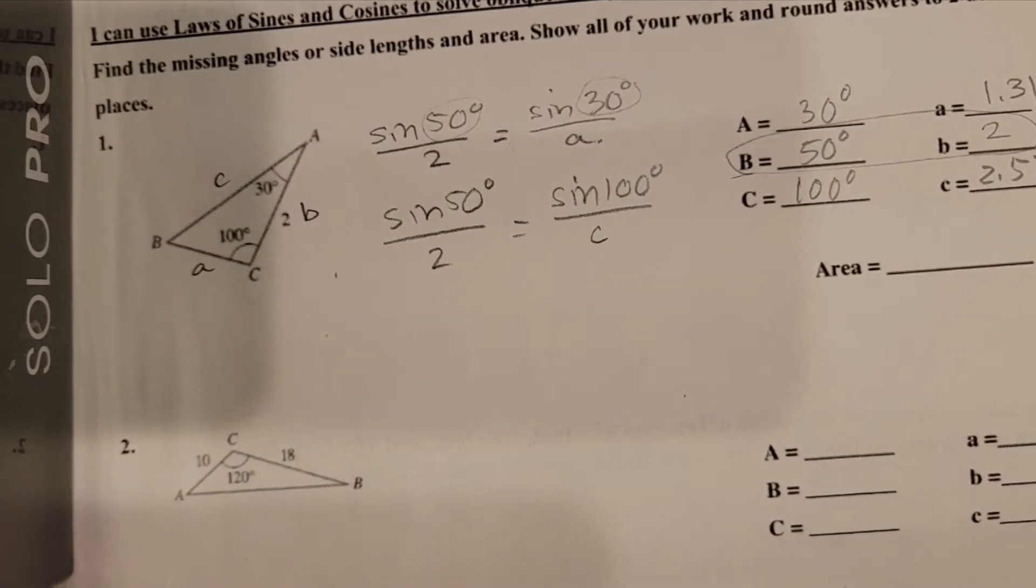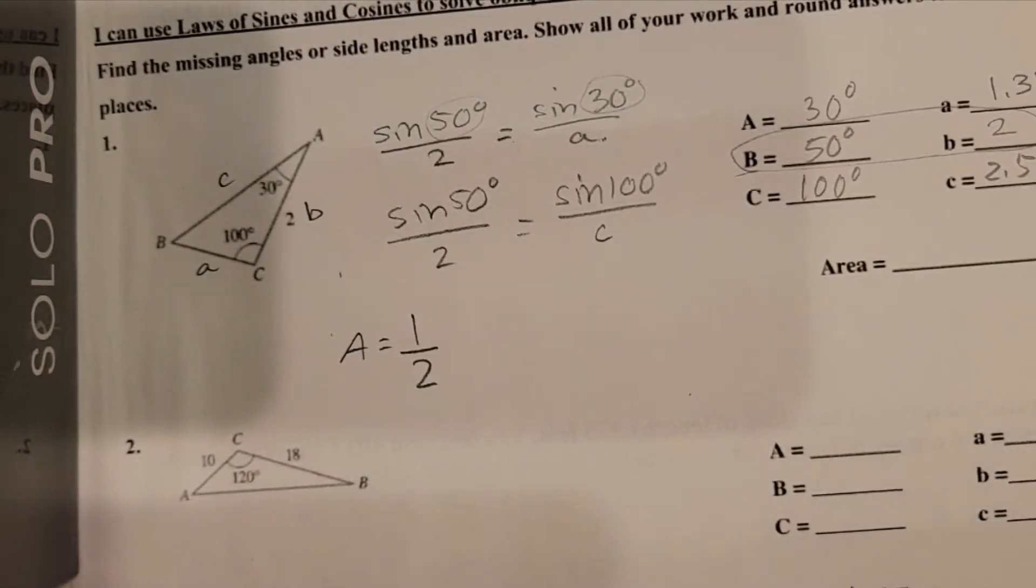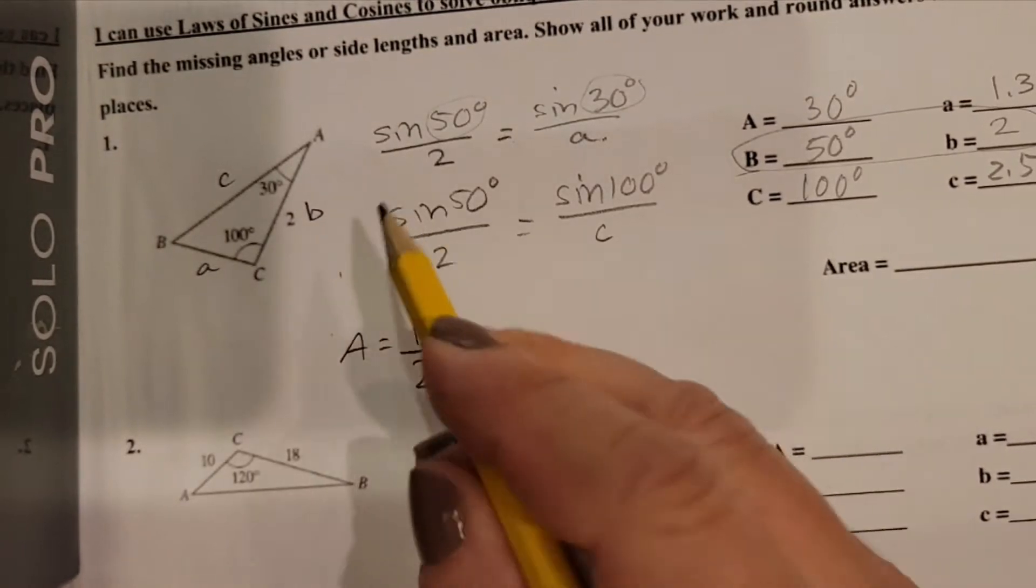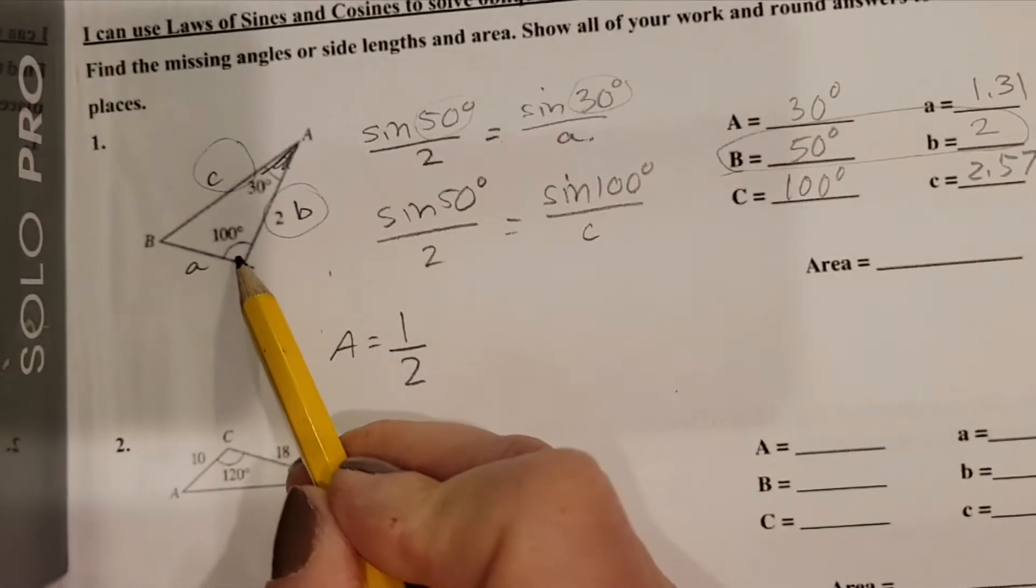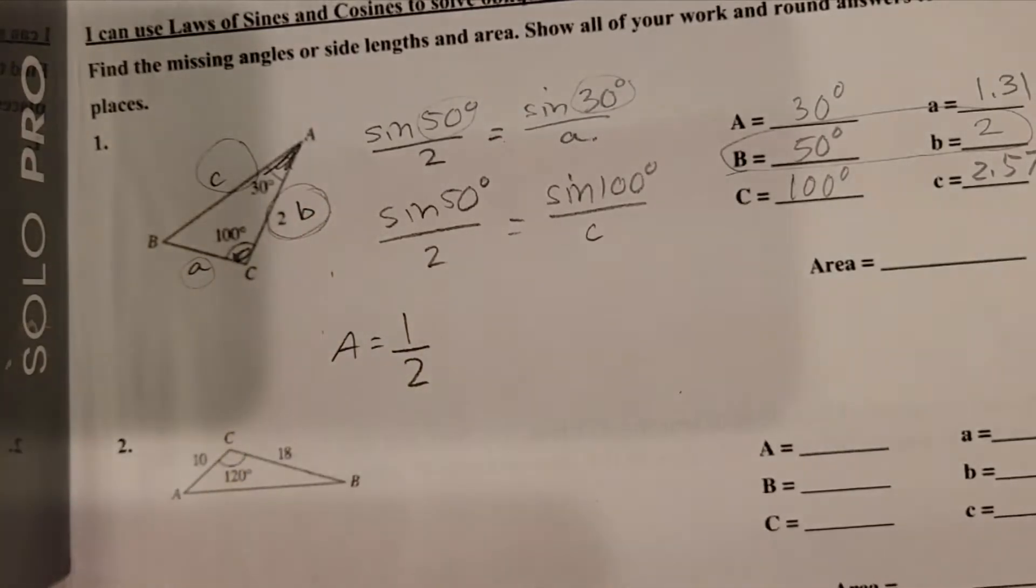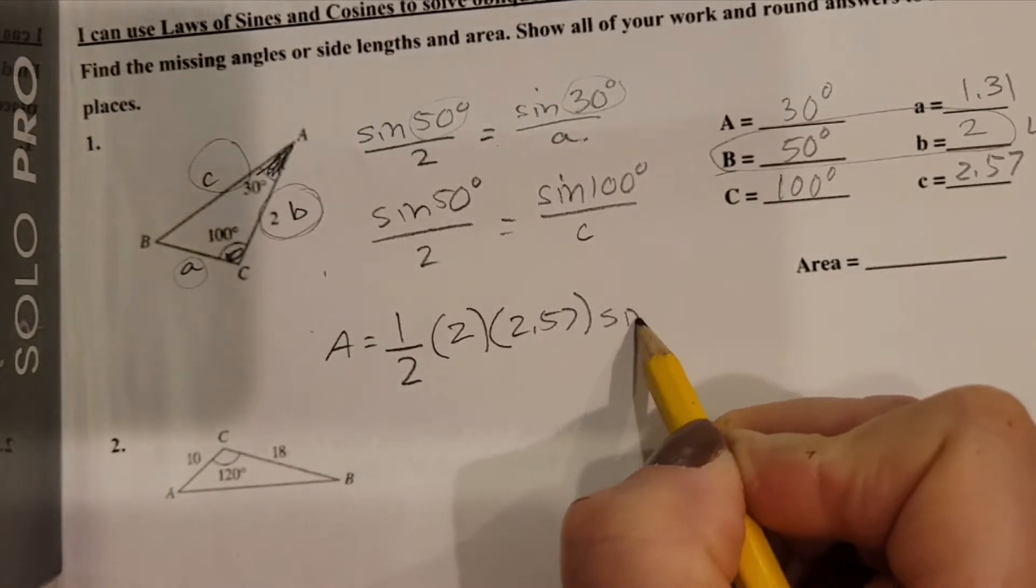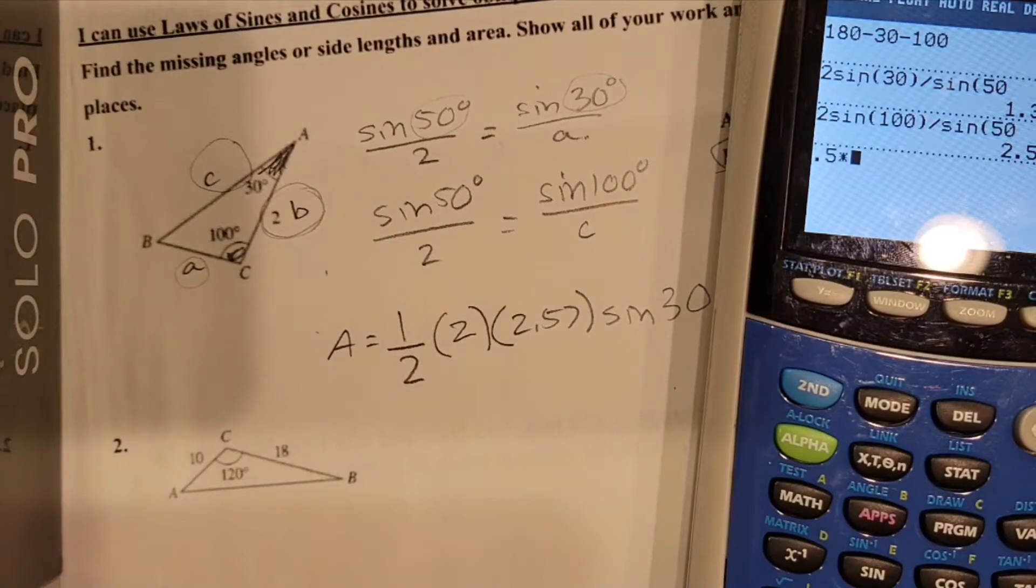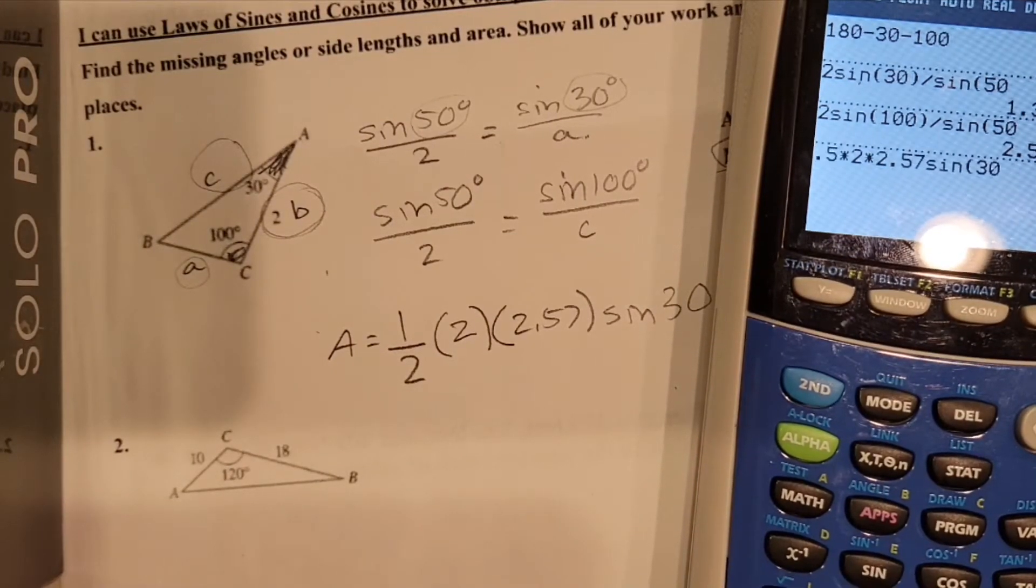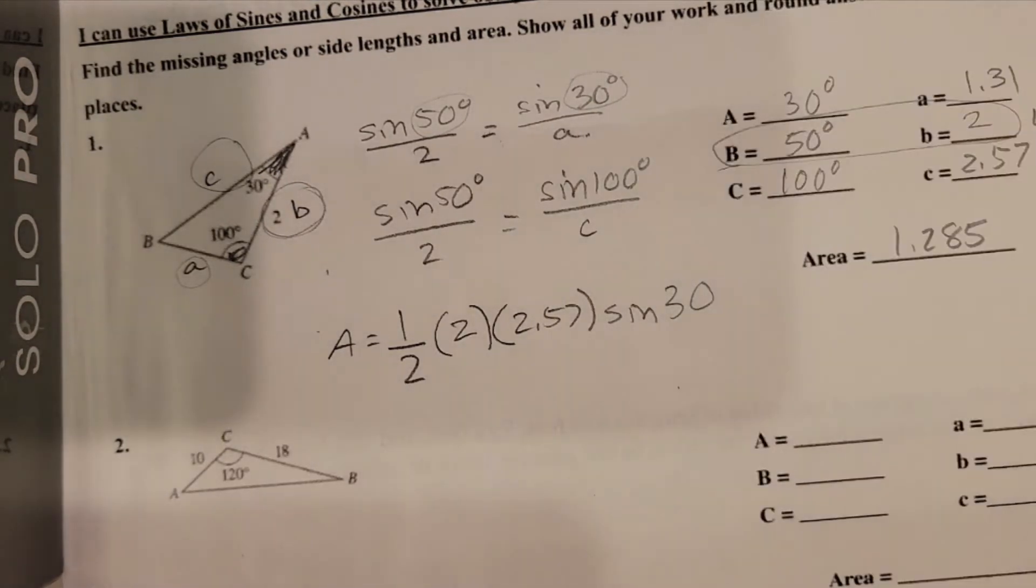Now to find the area, you can kind of use whatever you want. If you're going to use the 0.5 side-side formula, keep in mind that the two sides that you use have to be around an angle that they form. So let's pretend I was going to use this angle. I'd have to use this side and this side. If I was going to use the 100, then I'd have to use this side and this side. It's whatever two sides form that angle. So let's go with 30. I'm going to need to use side B, which is 2, side C, which is 2.57, and then the sine of the angle that's in between them, which is 30. So 0.5 times 2 times 2.57 times the sine of 30, and I got 1.285. I have no idea if that's what I had before, because I think before I did the 100 degree.